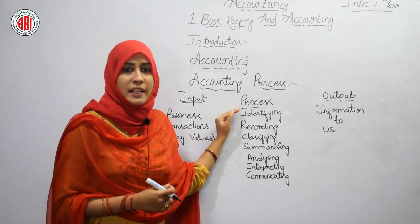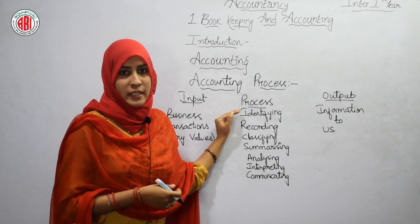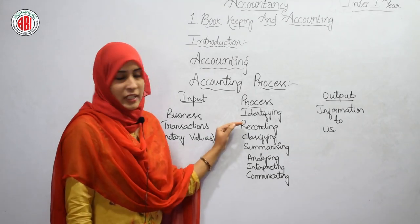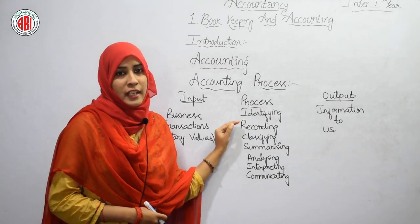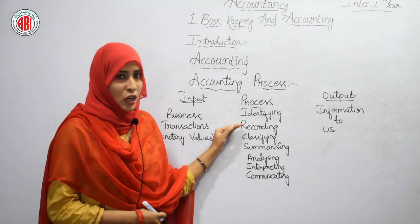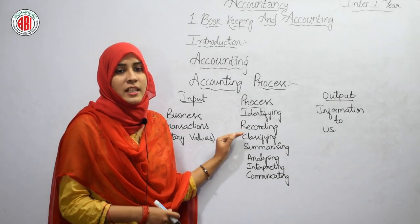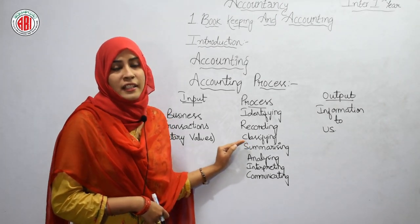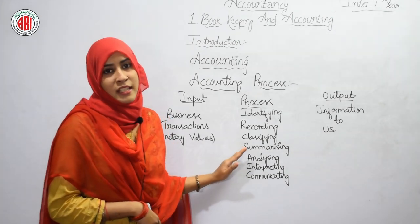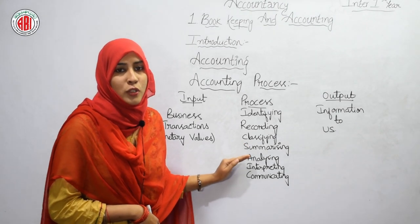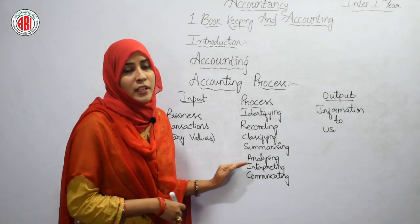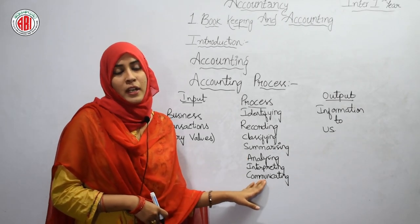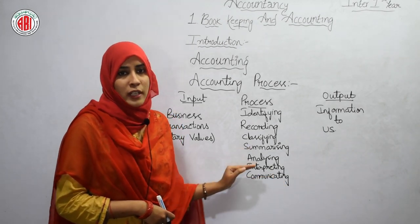The seven steps of the accounting process are: identifying the data, then recording that data as journal entries or subsidiary books, then classifying it in the form of a ledger book, then summarizing the data into a short summary, then analyzing — which means checking or reviewing the data, then interpreting — where we get information about profit and loss or the financial position of the company, and finally communicating, which means informing or giving the information about the data to interested parties.